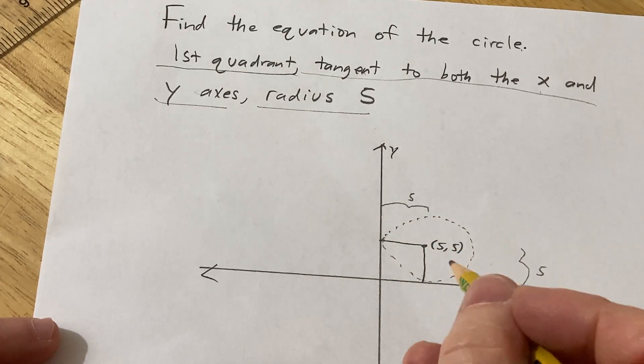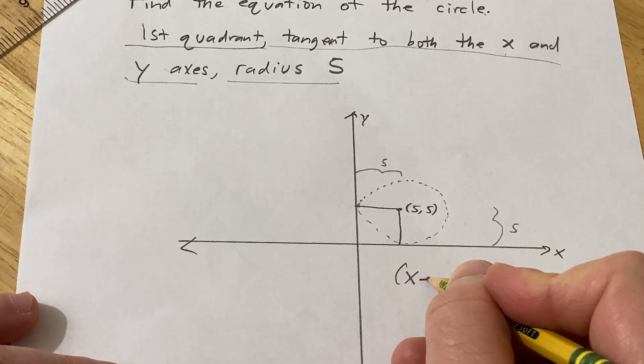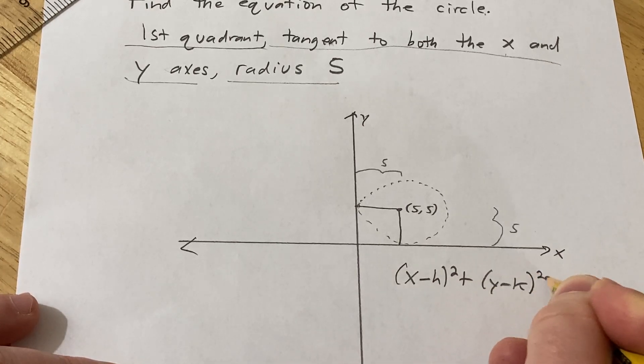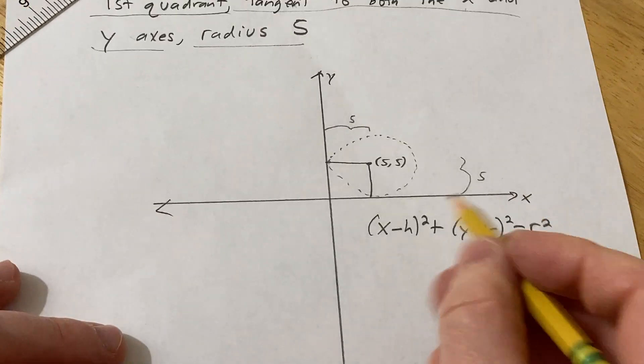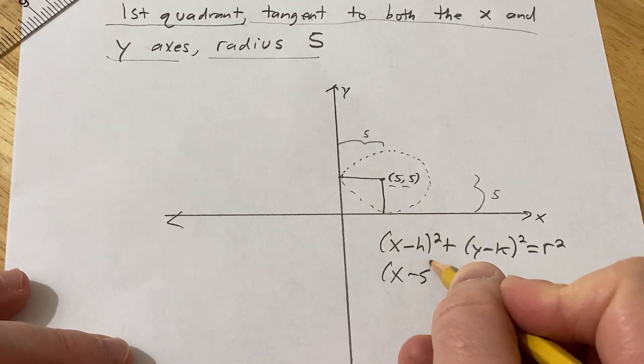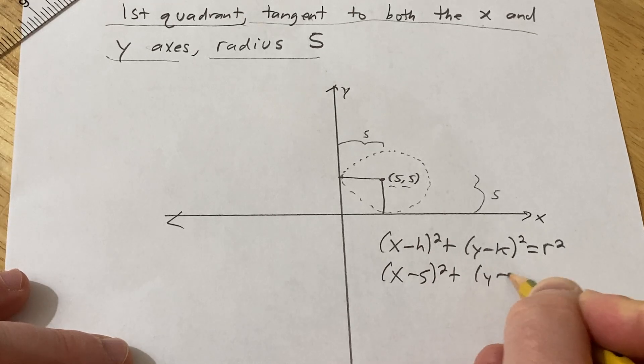Using the formula for the equation of a circle, it's x minus h squared plus y minus k squared equals r squared. Our h and k are 5 and 5, so it's x minus 5 squared plus y minus 5 squared.